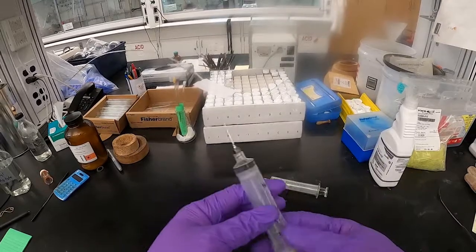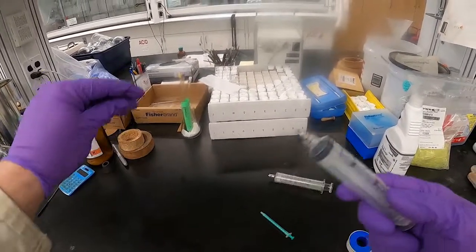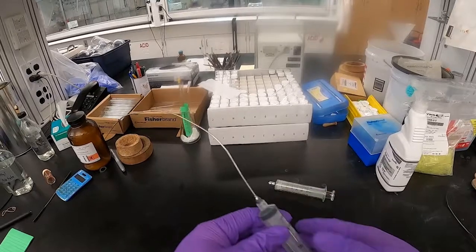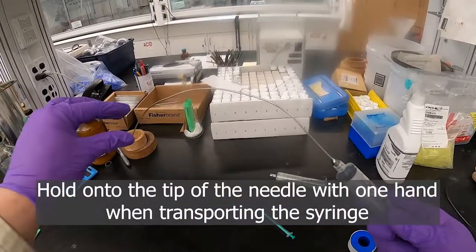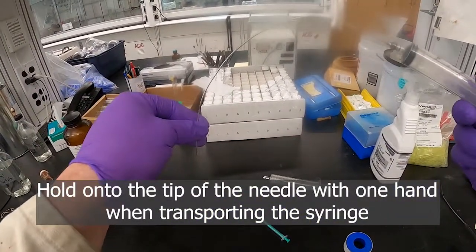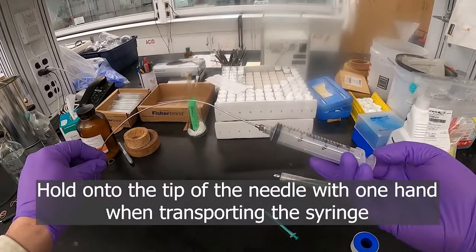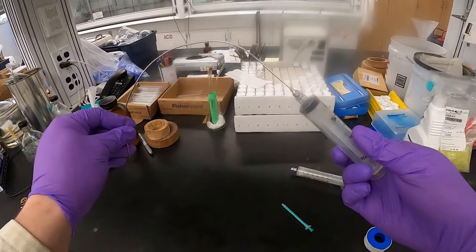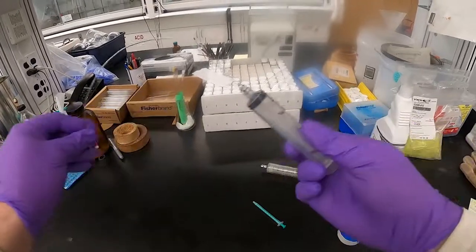When we're carrying a syringe around the lab, we want to have one hand on the end of the needle and another hand on the plunger, something along these lines, to hold the syringe when moving it from flask to flask.